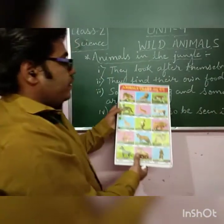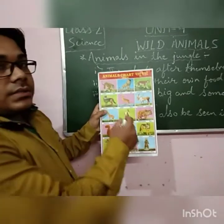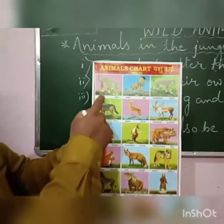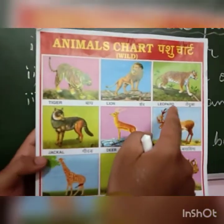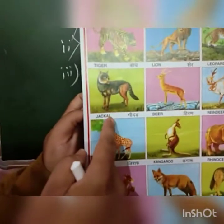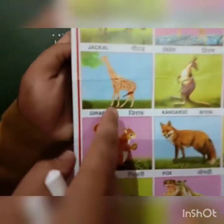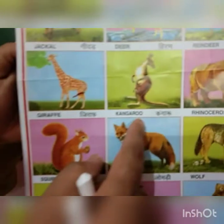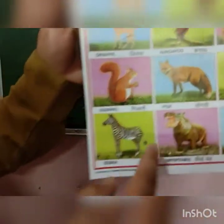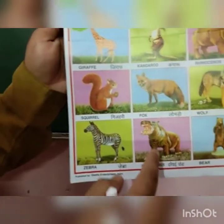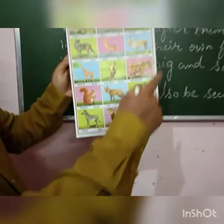Here you can see some of the animals — this is tiger, this is lion, this is leopard, this is jackal.